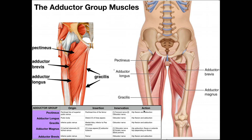The action of the pectineus is hip flexion and adduction. Of course it's going to be an adductor because it's in this group, but it also can facilitate hip flexion. Hip flexion would be if you brought your thigh in front of you — if you tried to throw a knee in front of you, that would be hip flexion. This is due to the fact that the insertion on the pectineal line is slightly more anterior, and so being an anterior insertion, it's going to have a little bit of hip flexion as well.